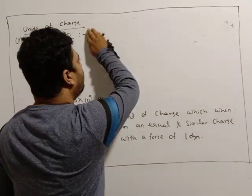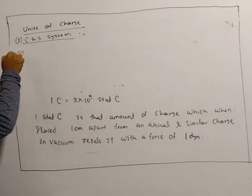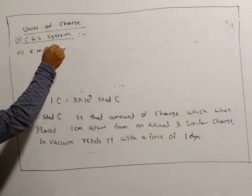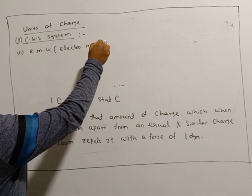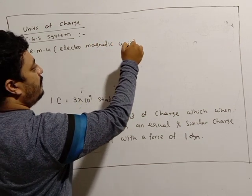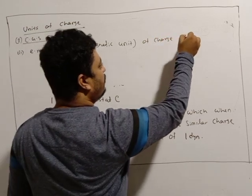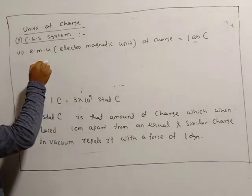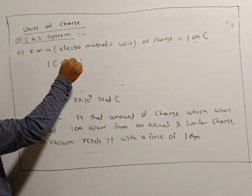The second unit in the CGS system is the EMU — electromagnetic unit — of charge. It is equal to 1 ab-coulomb, also called the absolute coulomb. 1 coulomb equals 1/10 ab-coulomb.